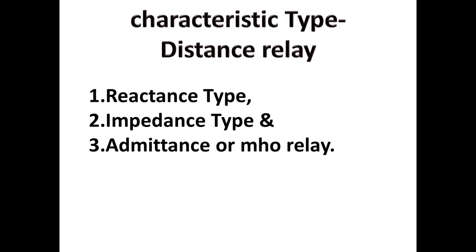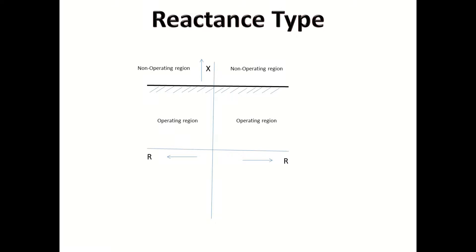This characteristics diagram of reactance, if you see this diagram, it was parallel with x-axis. The x-axis is for resistance characteristics. Since it was parallel with x-axis, this type of relay will not operate for resistance. It depends on reactance.